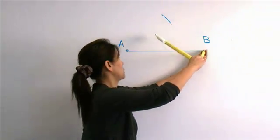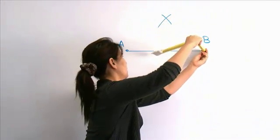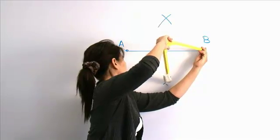Place the point of the compass on the other endpoint B. Without changing the compass radius, draw another big arc.